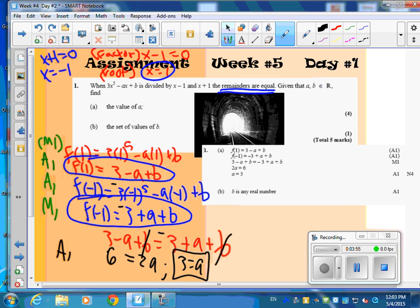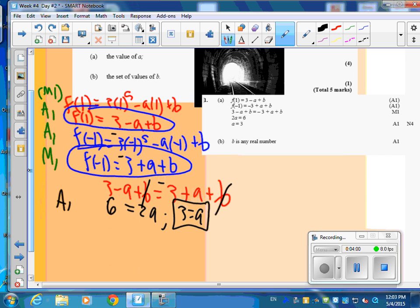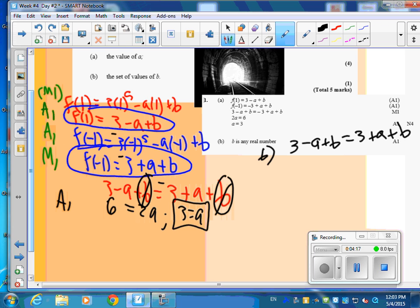And then last part, what set of values are there for b? Here's the weird part. Since b canceled out, remember when b canceled out? We go back into part b. When we go back, we get 3 minus a plus b equals negative 3 plus a plus b. And a is 3, right? So 3 minus 3 plus b is equal to negative 3 plus 3 plus b. And b can be any number.